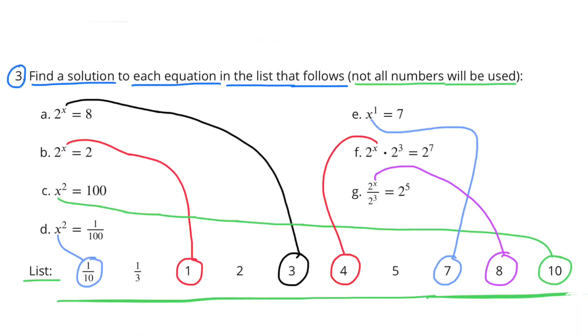Number 3. Find the solution to each equation in the list that follows. Not all numbers will be used. Part A. 2 to the power of X equals 8. Substitute the 3 for the X. 2 times 2 times 2 equals 8.